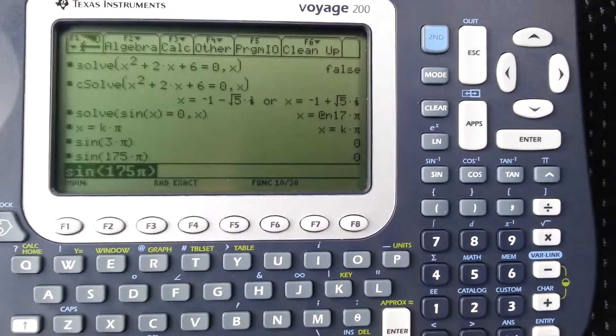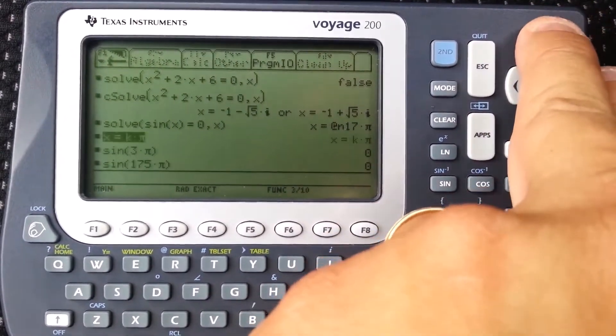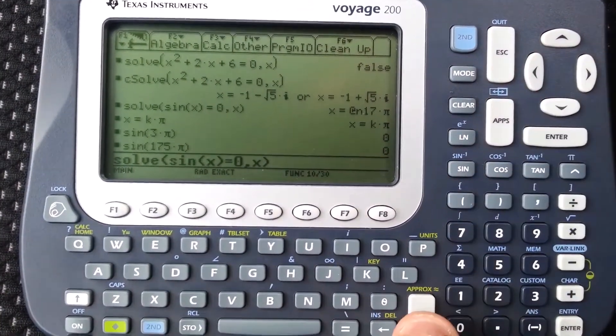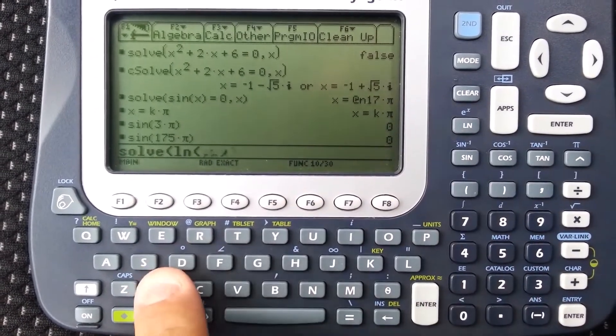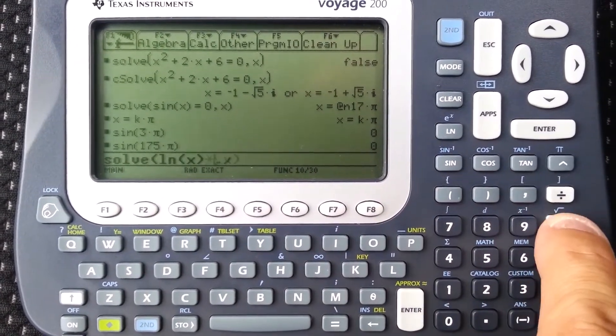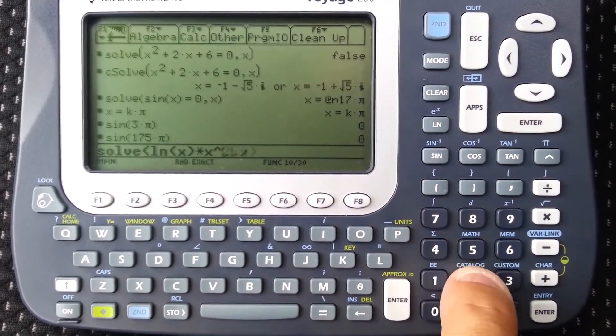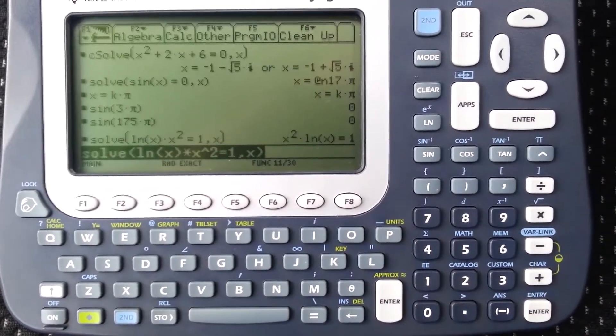Another solve that's pretty good is let me just go back to the regular solve and do a slightly more complicated function. Let's do natural log of x times x squared and have that equal to one. If you just do solve, it just returns it to you.